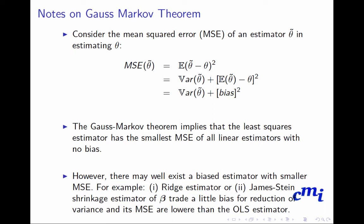Now consider the mean squared error (MSE) of an estimator θ̃ in estimating θ. The MSE is E[(θ̃ − θ)²], which can be written as Var(θ̃) + [E(θ̃) − θ]², that is, variance plus bias squared. The Gauss-Markov theorem implies that the least squares estimator has the smallest MSE among all linear estimators with no bias.